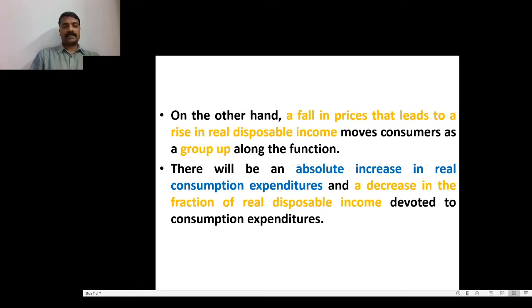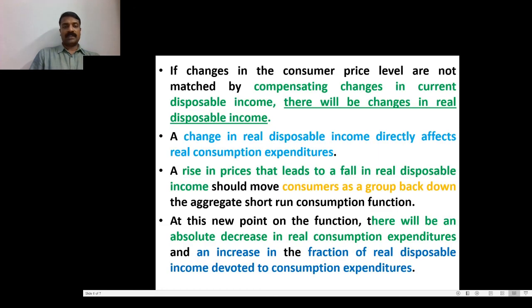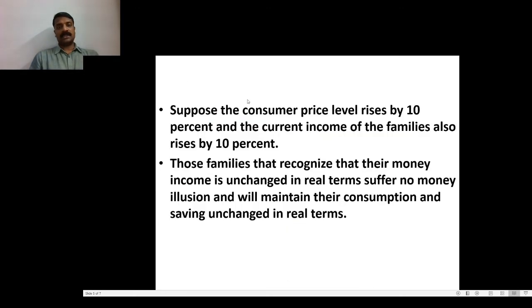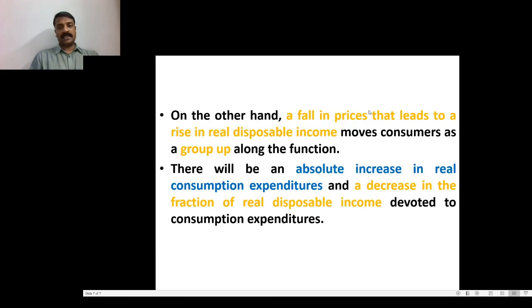When prices fall, there is an absolute increase in real consumption expenditure and a decrease in the fraction of real disposable income devoted to consumption expenditure. When the price level increases, there will be an absolute decrease in real consumption expenditure and an increase in the fraction of real disposable income devoted to consumption expenditure. When the price level decreases, there is an absolute increase in real consumption expenditure and a decrease in real disposable income devoted to consumption expenditure.